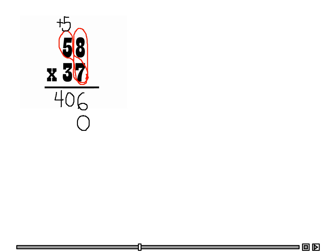And I am going to go from the tens place to the ones place — I have to multiply both numbers at the top. I am going to take the tens place digit, 3, and multiply that with the numbers at the top. So let's do 3 times 8, which is 24.